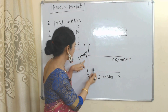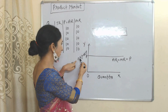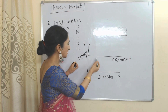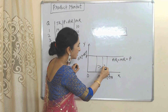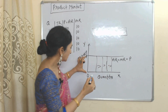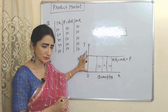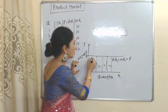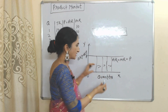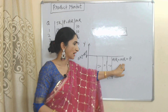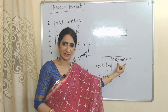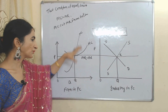On the x-axis we have quantities; on the y-axis we have average revenue, marginal revenue, and price. Here you can see, no matter how many quantities the firm is selling, prices will remain constant. This horizontal line represents average revenue, marginal revenue, and price, which are all equal to each other.